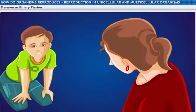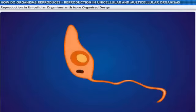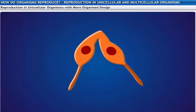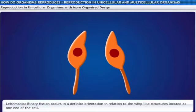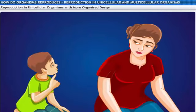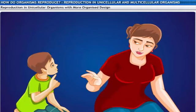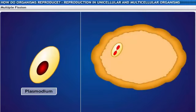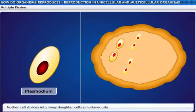Do all unicellular organisms reproduce like that? Not really. Let's look at a unicellular organism that has a more organized body design — for example, the leishmania. Leishmania have a whip-like structure at one end of the cell, and binary fission occurs in a definite orientation in relationship to these whip-like structures. The name sounds familiar — probably because it causes black fever. Interestingly, the malarial parasite, plasmodium, is also a unicellular organism. Plasmodium reproduces by multiple fission — it divides into many daughter cells simultaneously.